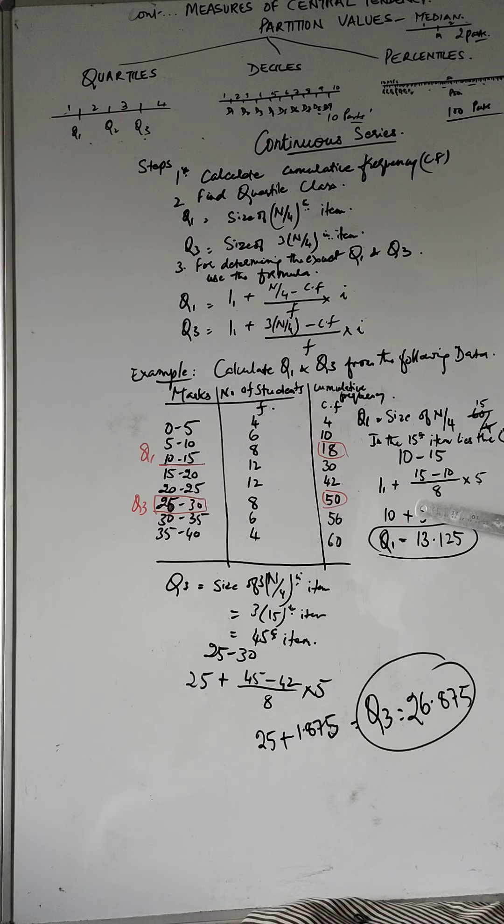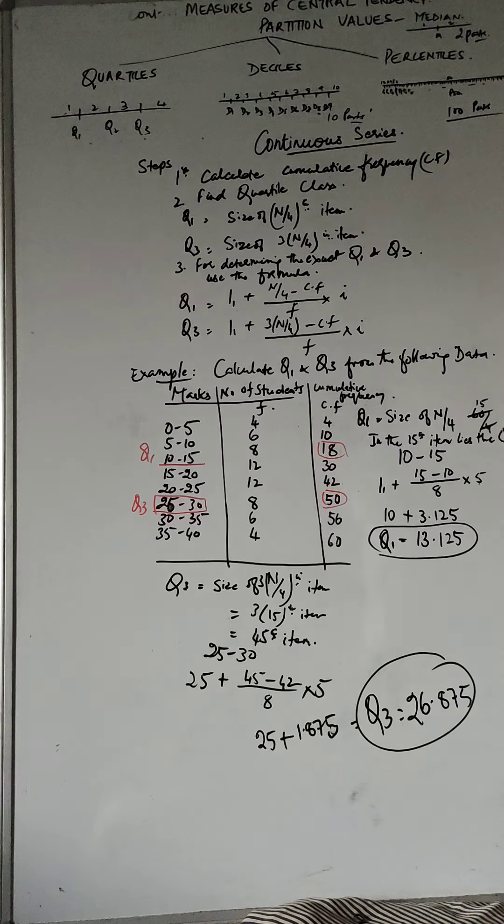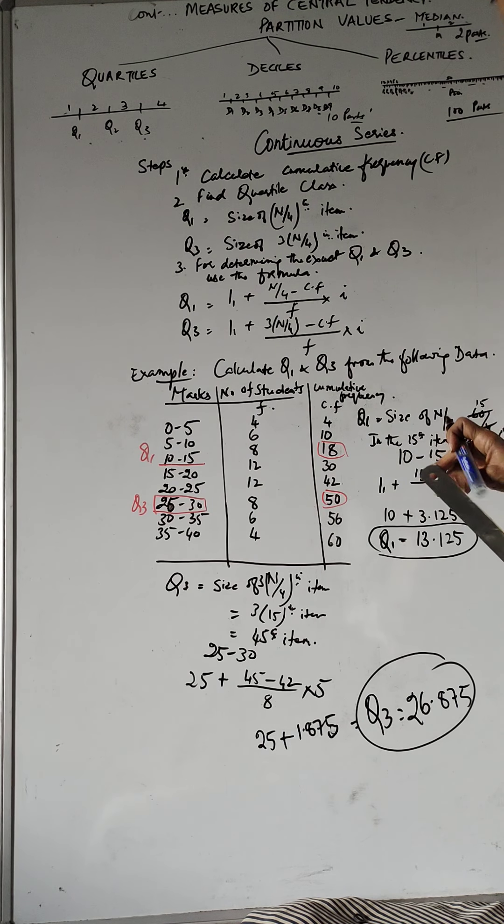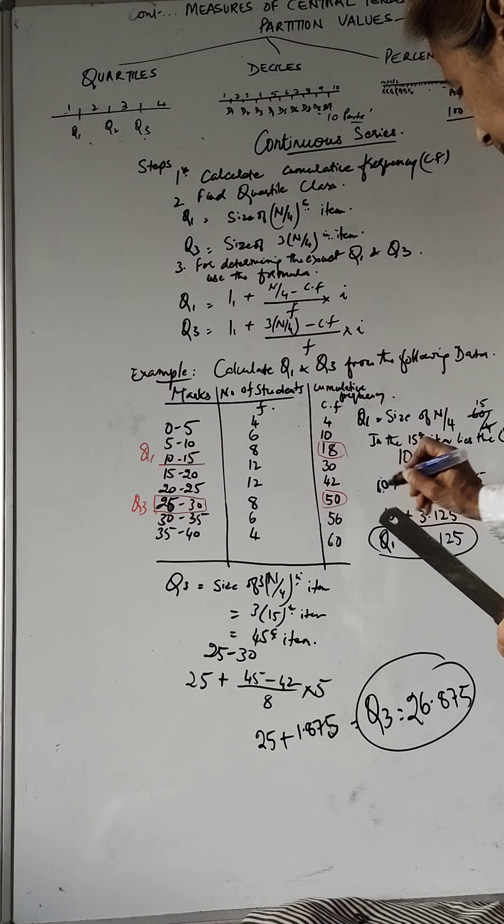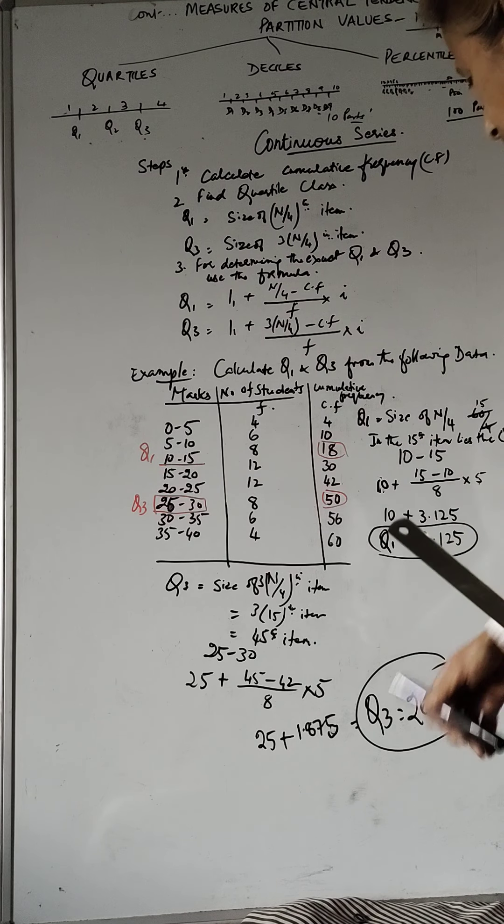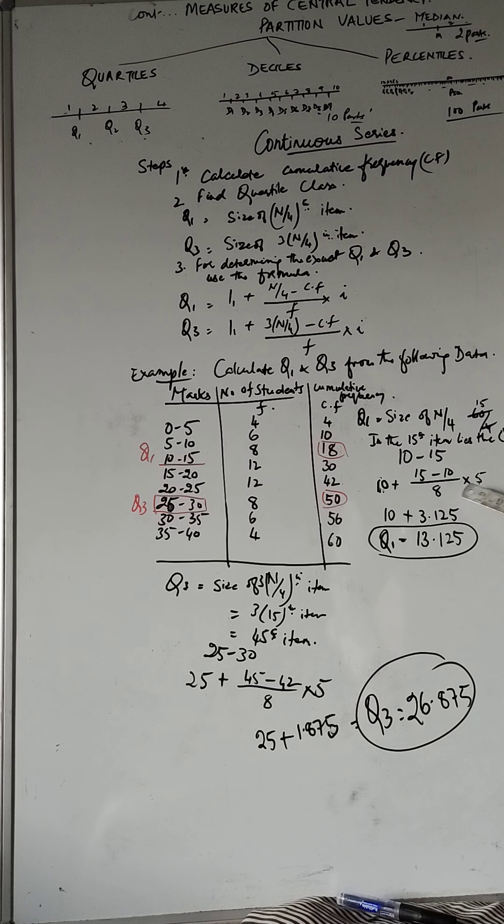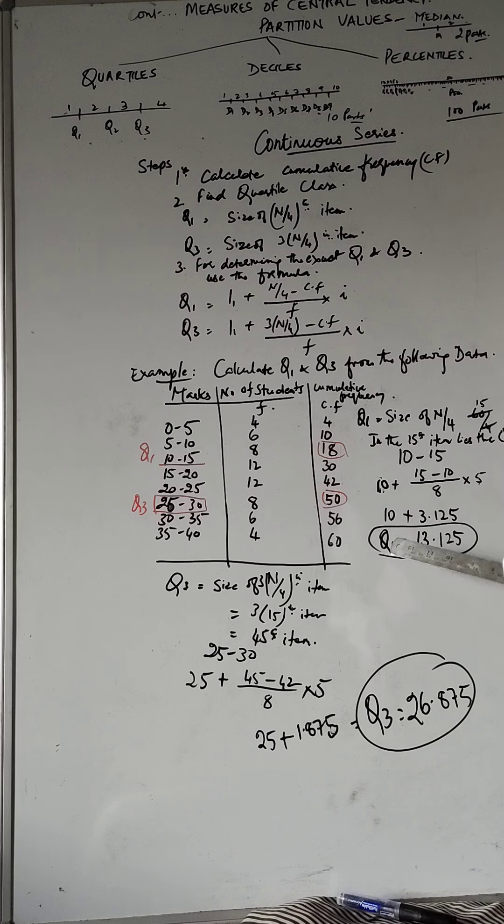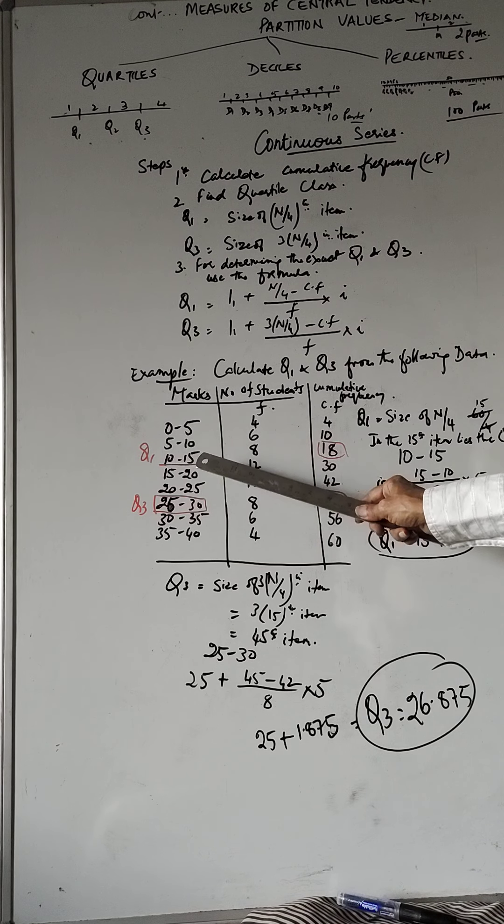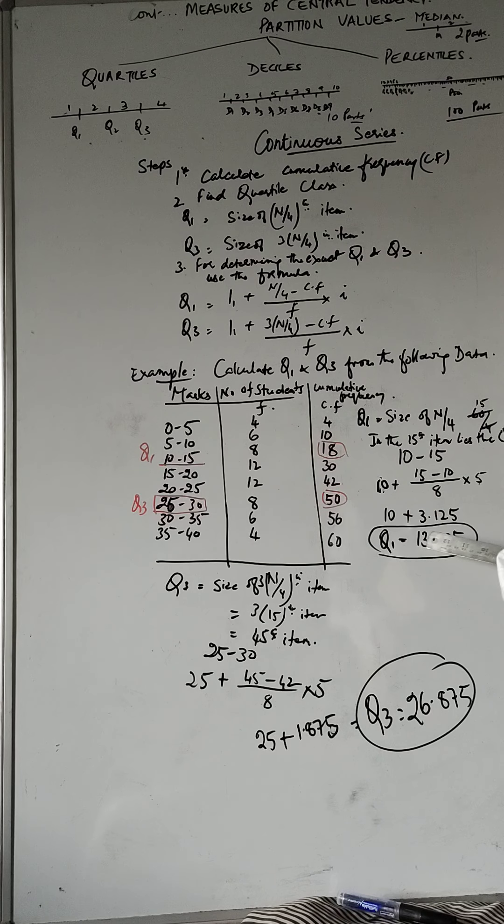So once you write down 10, the lower limit is 10. So 10 plus you work out 15 minus 10 upon 8 into 5. So 5 into 5, 25 divided by 8, you get 3.125. So you add that up to 10, you get 13.125. So 13.125 is the exact quartile. The lower quartile Q1 is 13.125. So if you understood this, now it will be easier for you to understand Q3.